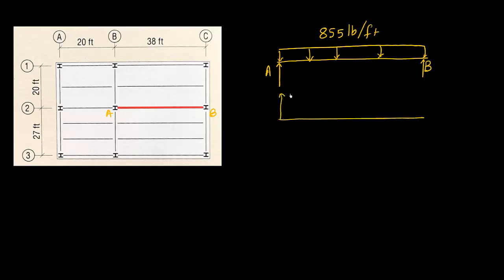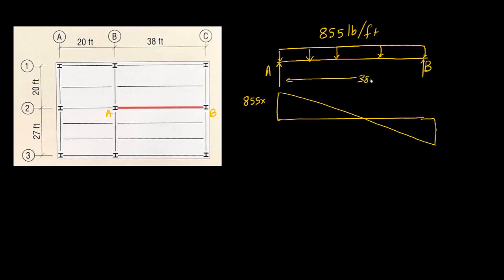We can also show the shear force diagram. Since we have a uniformly distributed load, the shear force will be linear. The reaction at each end is 855 times the beam length of 38 feet divided by 2, which equals 16,245 pounds — or 16.245 kilo-pounds. The same force comes at the other end as well, at 16.245 kilo-pounds.